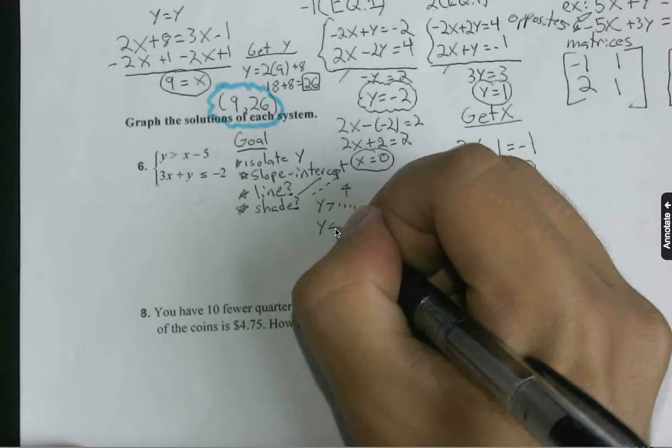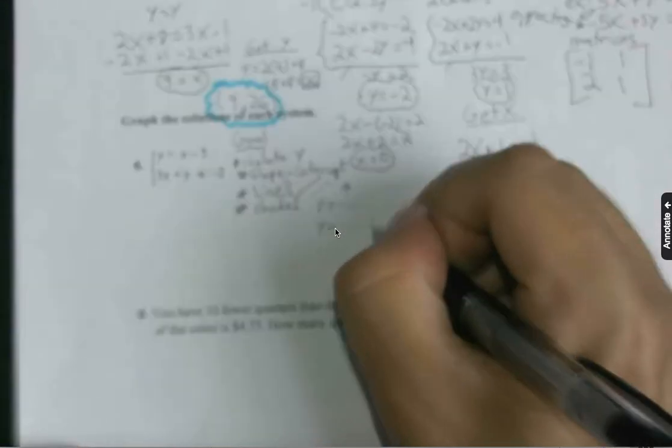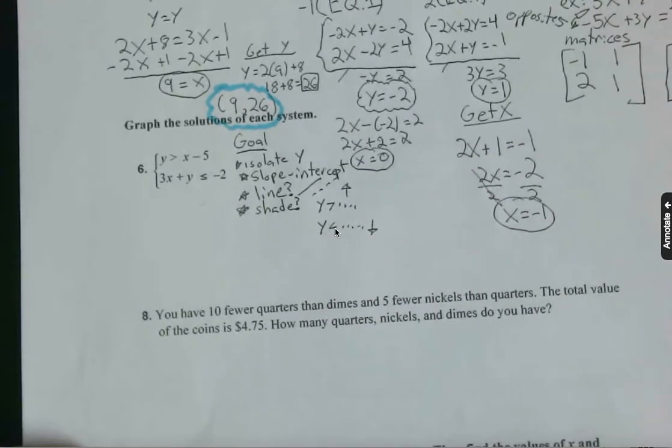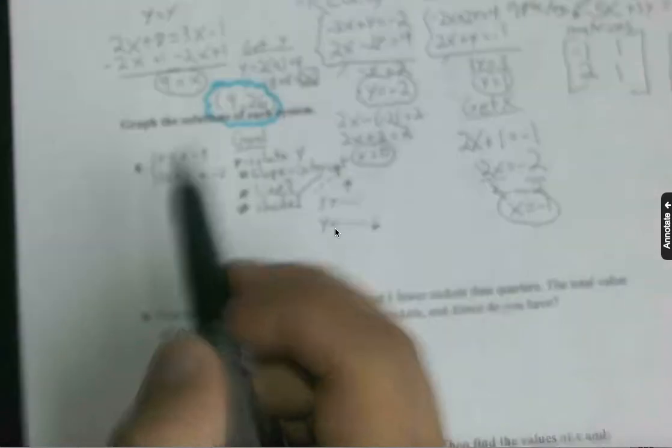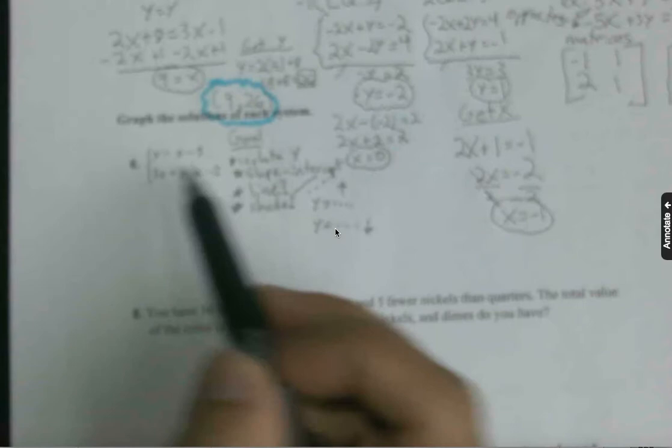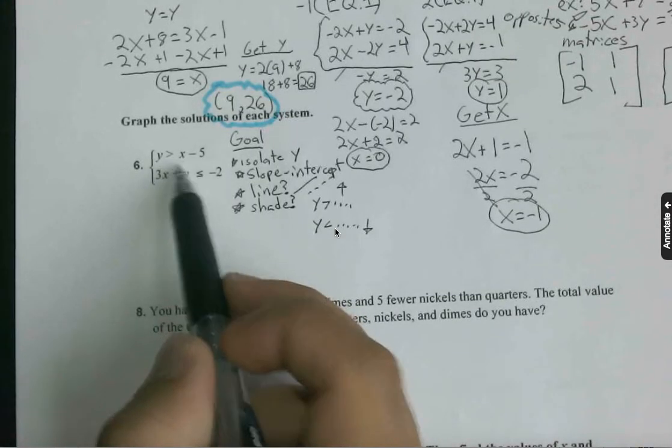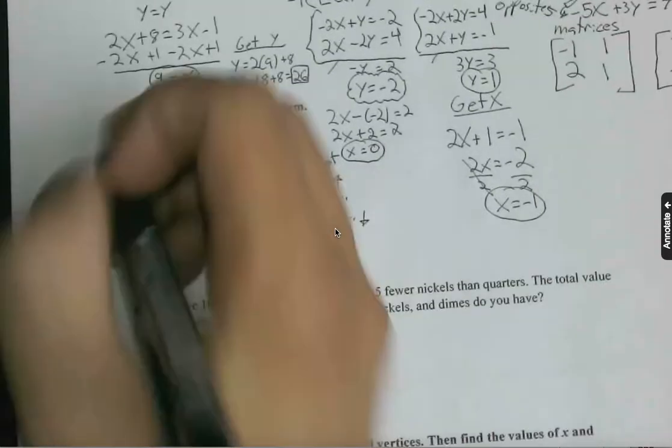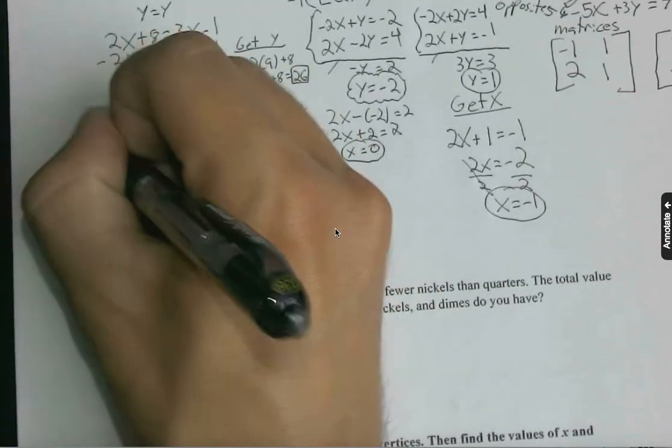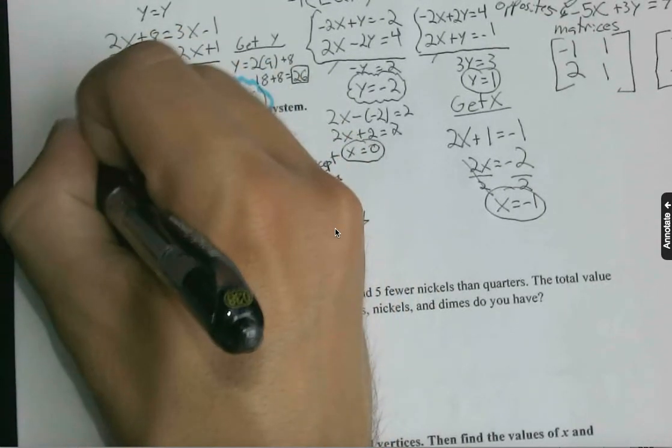So with this, I'm just going to highlight on a few characteristics before I switch to the calculator. This is y values greater than x minus 5. I know that this is going to be a dashed line, so this is definitely dashed. I'm also shading above.